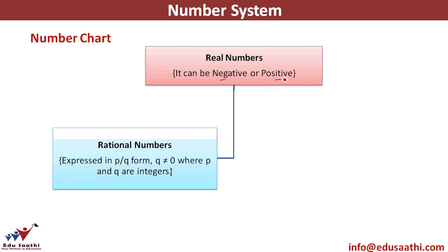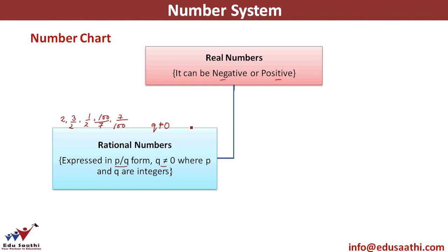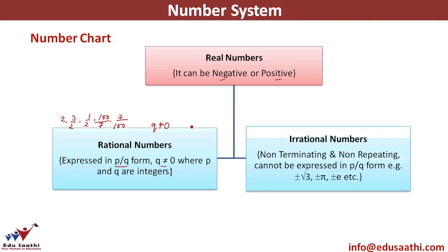Real numbers can be classified as rational or irrational. A rational number is any number that can be expressed in the form p/q where the denominator q is not equal to zero. Examples include 2, 3/2, 1/2, 100/7, or 7/100 — anything representable as p/q where q is not zero, because if q equals zero the number is undefined.